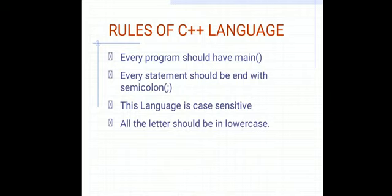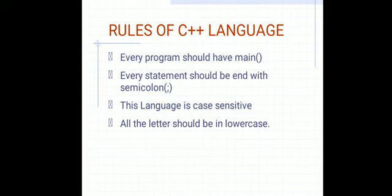Moving towards the rules of C++. First, every program should have a main function — as the name suggests, it is the main part of any program. Second, every statement should end with a semicolon; if you don't write a semicolon after any statement, you will get an error saying the statement is missing. Third, this language is case sensitive. Fourth, all the letters should be in lowercase.